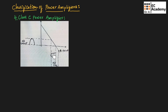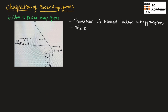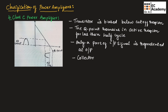This is the output current and this is the output voltage of the class C power amplifier. In class C power amplifier, the transistor is biased below the cutoff region. The Q point remains in the active region for less than half cycle, and hence only a part of the input signal is represented at the output. Therefore, the collector current flows for less than 180 degrees of the input signal. Since the Q point is below the cutoff region, the output is less than 180 degrees as shown in the figure.